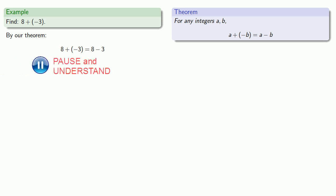We might take 8 plus the additive inverse of 3. Our theorem says that if I add a number and its additive inverse it's the same as subtracting. And so this is the same as 8 minus 3 or 5.